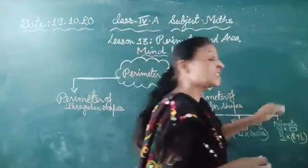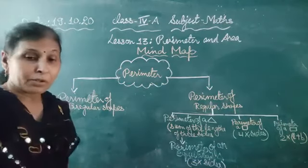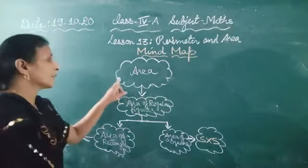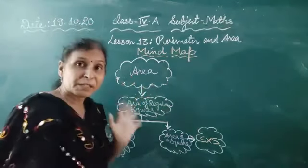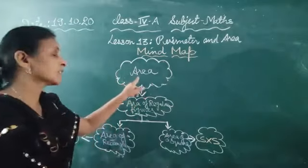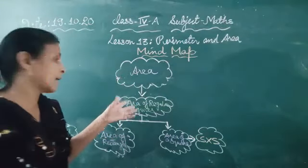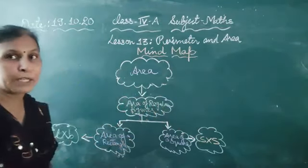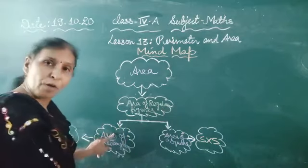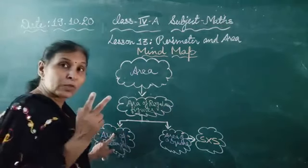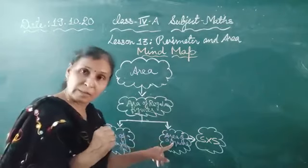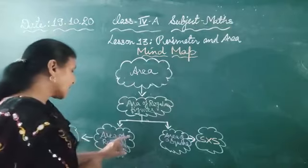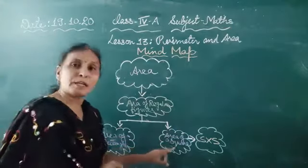You learn all these formulas. This is all about the mind map. Now we continue — that is the area. Abhi humne perimeter ke baare mein bataya tha. Now comes the area. This is also the mind map. Area of a regular figure — regular figure ki area kaise find out karenge? That is the area of a rectangle and area of a square.